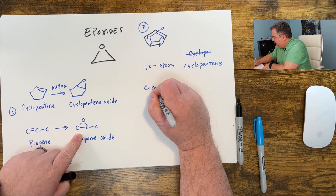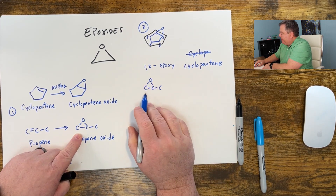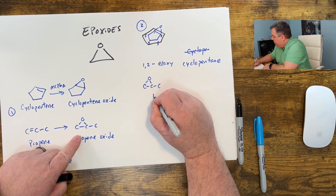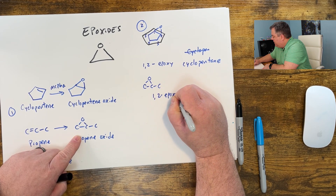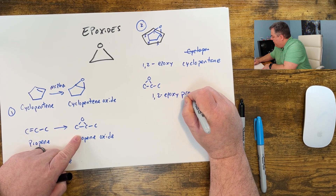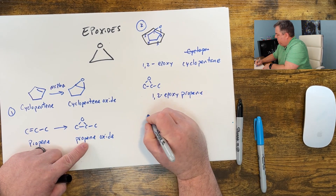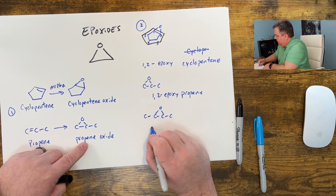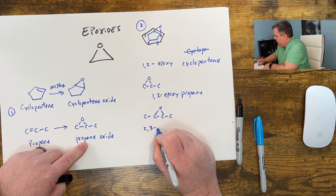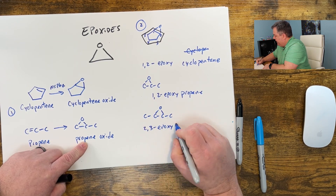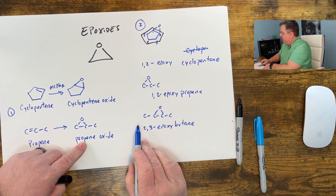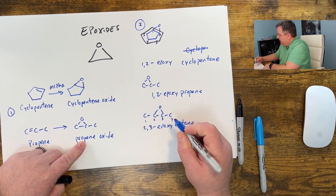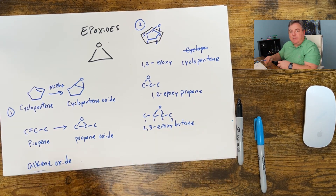Let's name this one. This is some kind of propane with the epoxy group on carbons one and two, so we would call that 1,2-epoxypropane. This one would be 2,3-epoxybutane — four carbons, so it's a butane, and on carbons two and three is where my epoxy is. That's the second way.